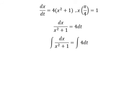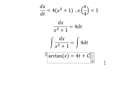This one we have arctan of x. This one we have 4t and we put C in here.